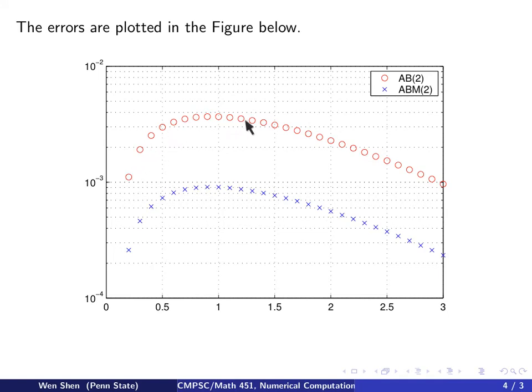So you see, without applying the corrector step, we get a much bigger error than with the correction step. So the correction step actually does reduce the error by quite a bit.